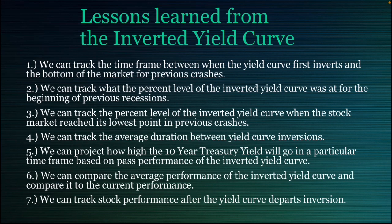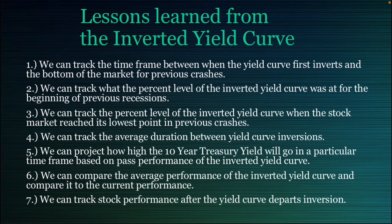Number two, we can track what the percent level of the inverted yield curve was at for the beginning of previous recessions to guide us for future recessions. Number three, we can track the percent level of the inverted yield curve when the stock market reached its lowest point in previous crashes. Number four, we can track the average duration between yield curve inversions. Number five, we can project how high the 10-year treasury yield will go in a particular time frame based on past performance. Number six, we can compare the average performance of the inverted yield curve and compare it to the current performance. Number seven, we can track stock performance after the yield curve departs inversion.